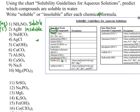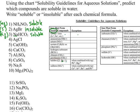Number 3: NaHCO3, sodium bicarbonate. Sodium is a Group 1 ion — if there's a sodium ion, it is soluble, no exceptions. So this is aqueous. Number 4: silver chloride, AgCl. Chloride is one of the halides — it is soluble, except when it's with silver, lead, or mercury. Here the halide is with silver, making this insoluble. We would say S for solid.